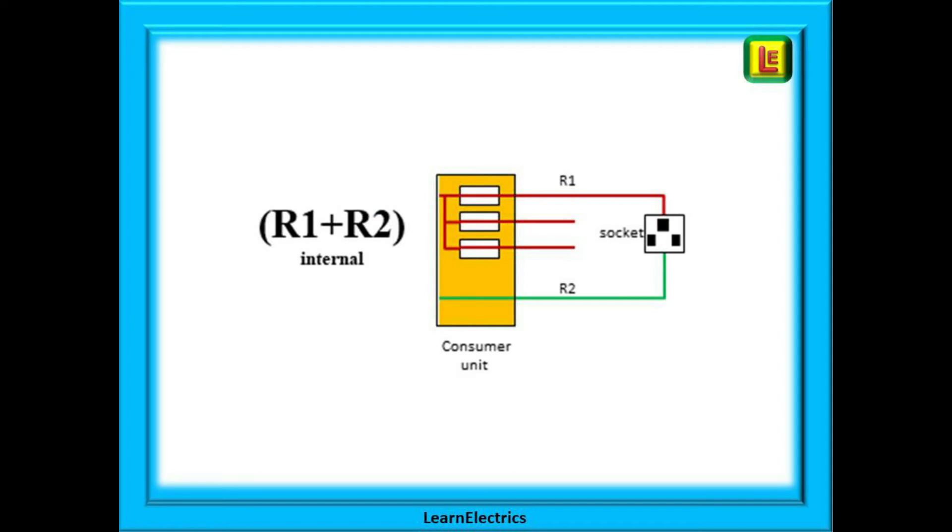Now R1 plus R2 is the inside part of the circuit from the consumer unit to the furthest or most remote part of each circuit in the property. In other words, the longest cable length possible from each fuse or MCB. As it is measured on a dead system, it is a resistance measurement. It is the part of the installation that is under your control, the internal wiring of the phase or live conductor and the earth conductor. R1 plus R2 is the part of the circuit that is inside the property.